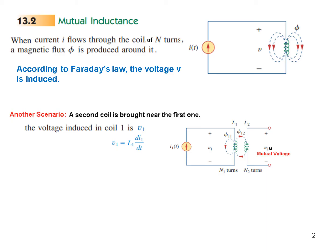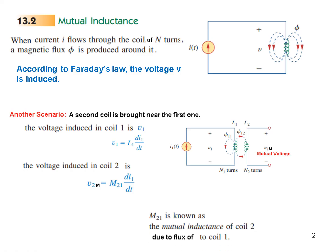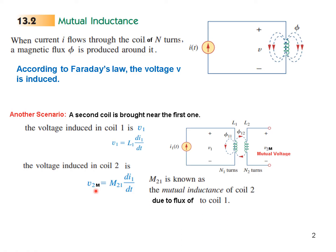The voltage V1 can be written as L1·dI1/dt, since the voltage across an inductor is L·dI/dt. Similarly, for the mutual voltage we write V2M = M21·dI/dt.